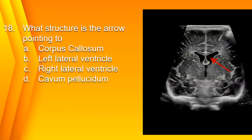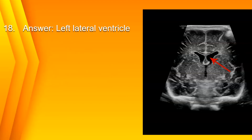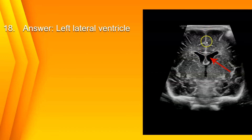Number 18: What structure is the arrow pointing to? A. Corpus callosum, B. Left lateral ventricle, C. Right lateral ventricle, or D. Cavum septum pellucidum? The answer is B. Left lateral ventricle. The indicator is on the right side of the patient's body — so this is the right lateral ventricle, this is the left lateral ventricle. Here's your corpus callosum, interhemispheric fissure, third ventricle, bilateral thalami, and Sylvian fissures.